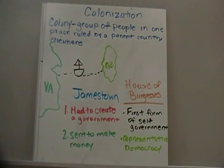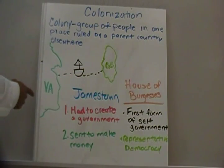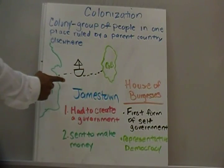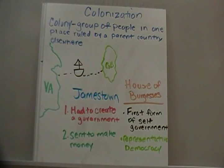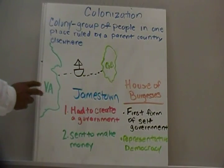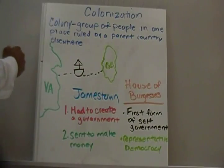The other thing about Jamestown is that they were sent over here to make money. The people in England knew that the New World had natural resources and raw materials they could use. So the people of Jamestown were sent over to collect these raw materials. They figured out how to grow tobacco, which was sent back to England where people enjoyed cigarettes in much higher volume than before. So the people of Virginia became profitable and were able to sustain their lives because of growing tobacco.